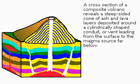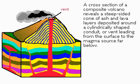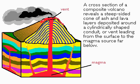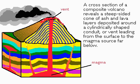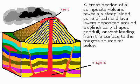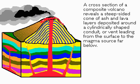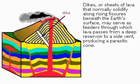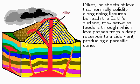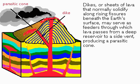A volcano may have more than one vent. During an eruption, dikes or sheets of lava that normally solidify along fissures beneath the earth's surface may serve as feeders for lava passing to a side vent, producing a parasitic cone.